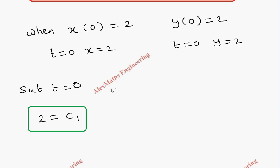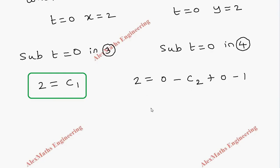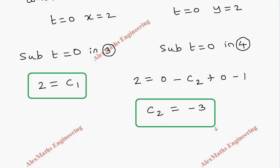Now using the condition t equals 0 in equation 4 for x. When t is 0, x is 2. c1·sin(0) is 0, so the first term vanishes. Minus c2·cos(0) is minus c2 times 1. t squared at t equals 0 is 0, and we have minus 1 at the end. So 2 equals minus c2 minus 1, which gives c2 equal to minus 3. So the two constants are c1 equals 2 and c2 equals minus 3.